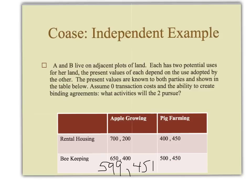If negotiation costs or transaction costs were $150, it would be impractical to negotiate any agreement, and player B would end up raising pigs while player A does beekeeping. Player one has no way of making player two better off under high transaction costs of $150. But without transaction costs, we end up in the most efficient solution through an exchange with the ability to commit to it, achieving the highest potential payoffs.